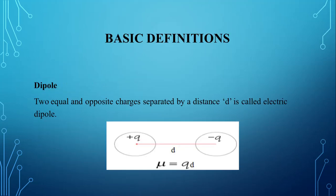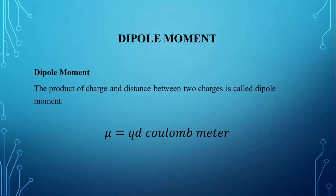Let us see some basic terms and definitions involved in dielectrics. The first term is dipole. A dipole consists of two equal and opposite charges separated by a distance d; it is called an electric dipole. The figure shows a simple electric dipole with one positive charge and one negative charge separated by a small distance d. Next, we see the dipole moment — it is the product of one of the charges of the dipole and the distance between the two charges.